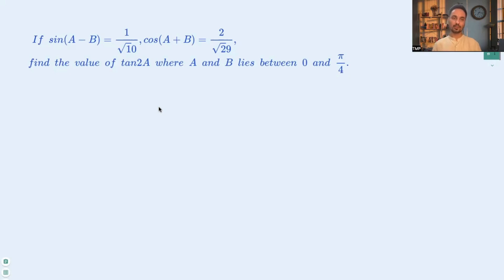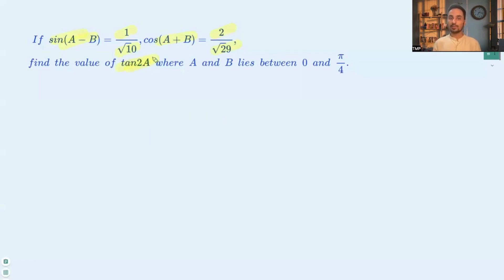Hi everyone, today we are discussing a trigonometric question based on the compound angle formulae. We are given that sin(a - b) = 1/√10 and cos(a + b) = 2/√29, then find the value of tan 2a, where a and b lie between 0 and π/4.